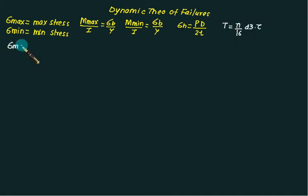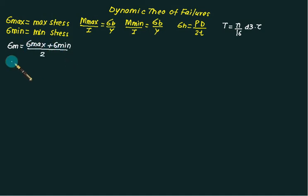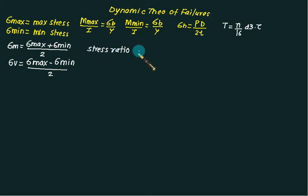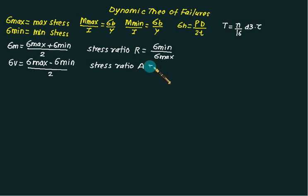The mean value of stress is sigma_mean = (sigma_max + sigma_min) / 2, and the variable stress sigma_v = (sigma_max − sigma_min) / 2. From these two values, they will ask you about stress ratios. One stress ratio is defined as R = sigma_mean / sigma_max, and the other is defined as A = sigma_v / sigma_mean.